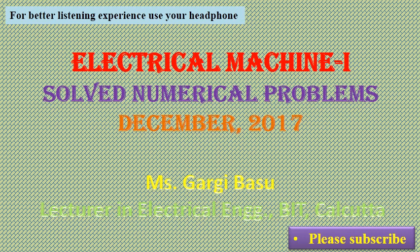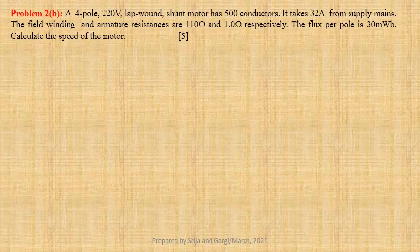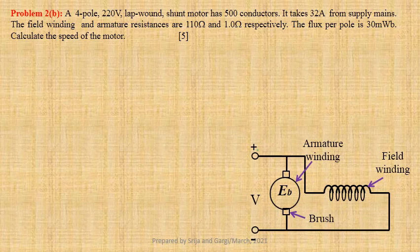This is the December 2017 semester exam numerical problem on Electrical Machines. The field winding and armature resistance values are given as 110 Ohm and 1 Ohm respectively, and we need to find the speed of the motor. Flux per pole is given as 30 milliweber.